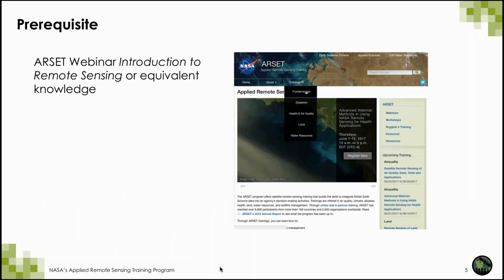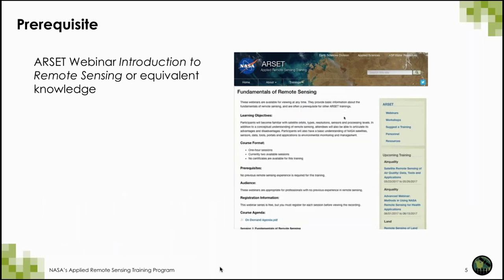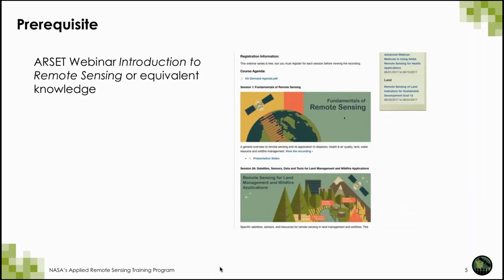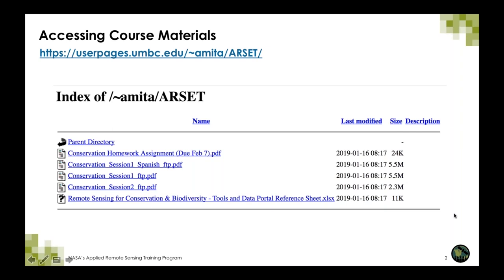We only have one prerequisite for this course and that is our Fundamentals of Remote Sensing or equivalent knowledge. For this course, you will need to access the course materials via the FTP website shown here. This is a little different than what we've done for past RCEP webinars, where all the materials have been located on the RCEP website. You'll be able to download the PDFs of the sessions and find the link to the homework via the FTP website.